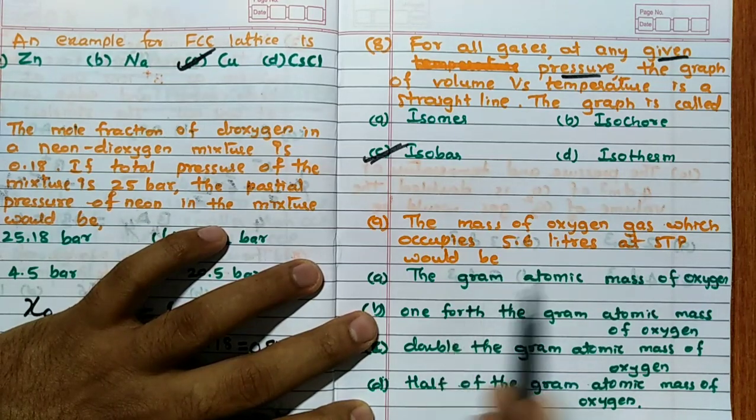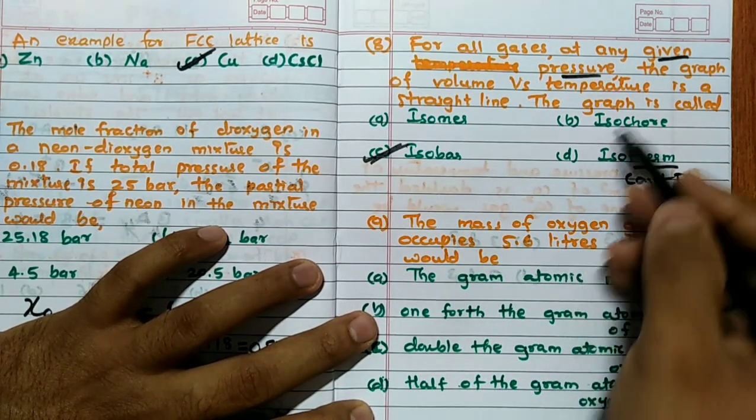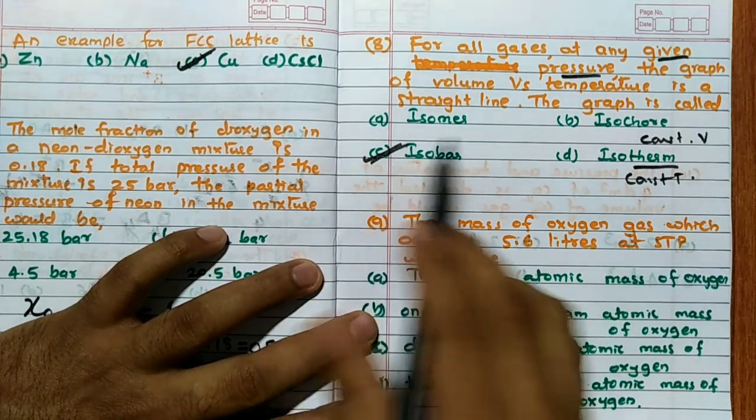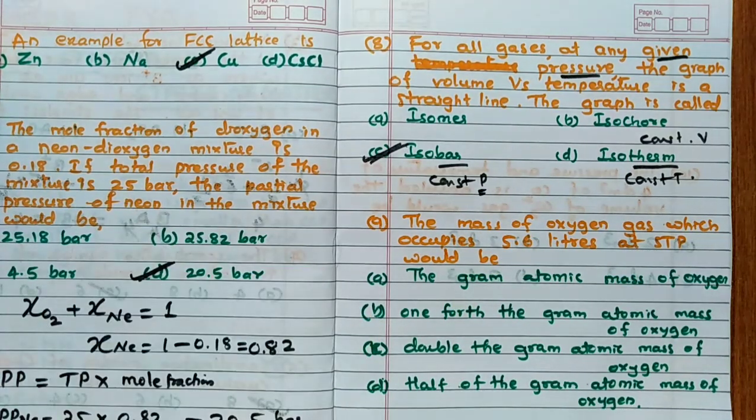But isotherm, remember, it is constant temperature. Isochore is nothing but constant volume. So hence isobar is nothing but constant pressure. So the answer for this question is C.